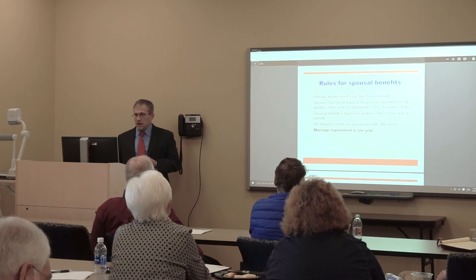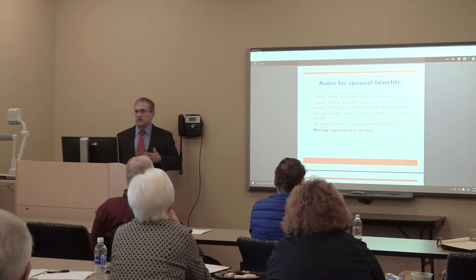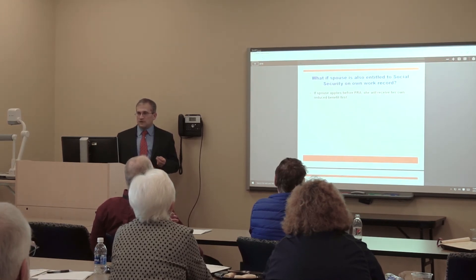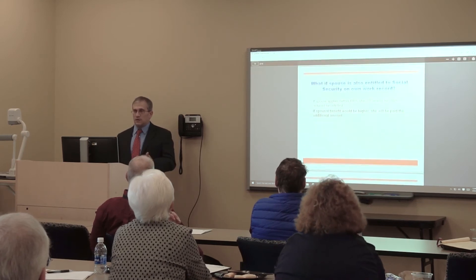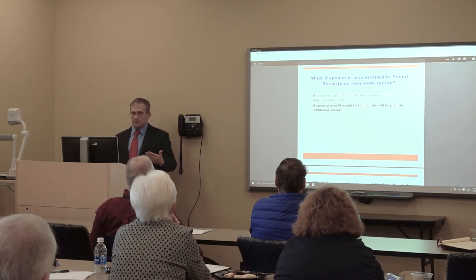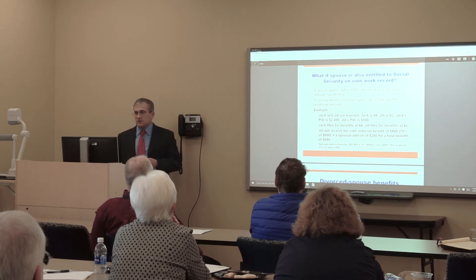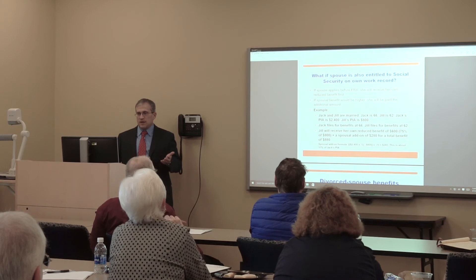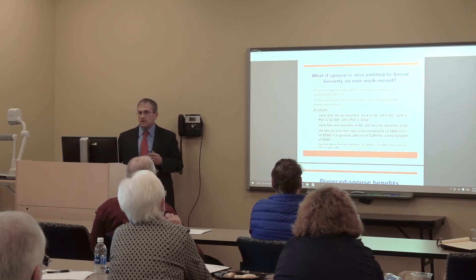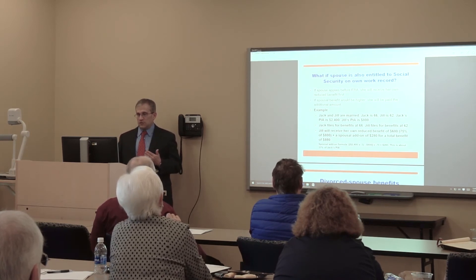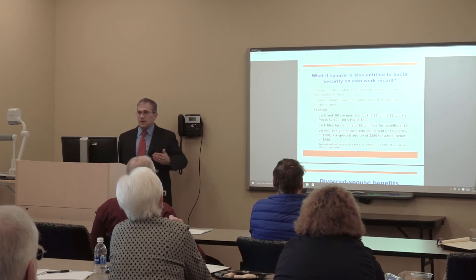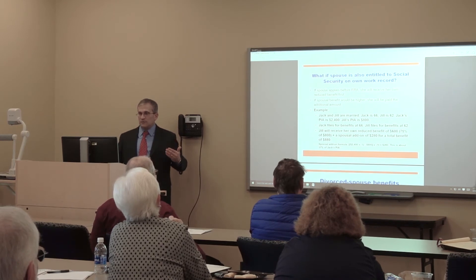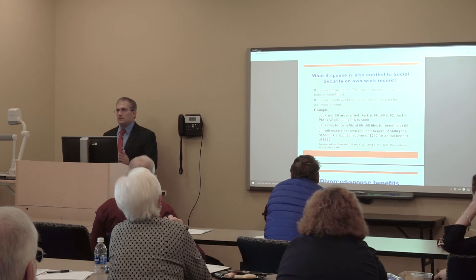An example with both spouses having work records: Jack is 66 with a PIA of $2,400; Jill is 62 with a PIA of $800. Jack files at 66, Jill files at 62. Jill receives her own reduced benefit of $600 — a 25% discount on her $800 — plus a spousal add-on of $280, for a total benefit of $880. This is how Social Security combines the two when both spouses have worked.